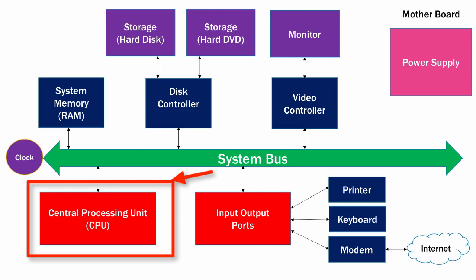Newer CPUs will have multiple cores. What that means is it's almost like having multiple CPUs on the computer, and that will allow programs to operate in much more of a parallel fashion. So the more cores on the CPU, the faster the computer is because it can get more work done — it can do things in parallel.